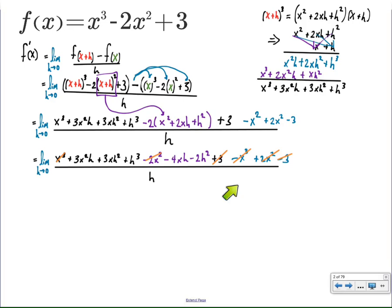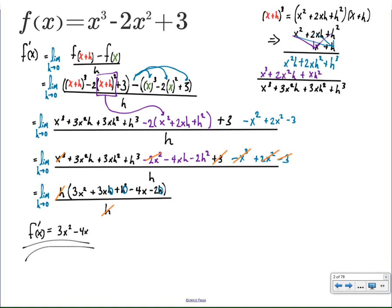So, now I'm going to factor out an h from each of the terms here, resulting in this, which allows me to then get the h out of the bottom. And at this point, because h is out of the numerator, I can allow h to approach 0, which is going to affect any term that still has an h factor left in it. So, these three terms are going to zero out, and we're left with 3x squared minus 4x.